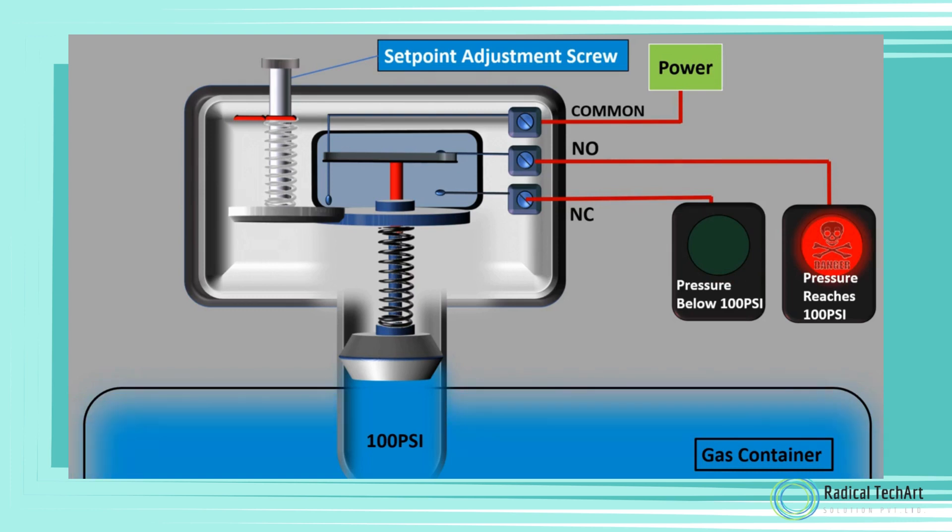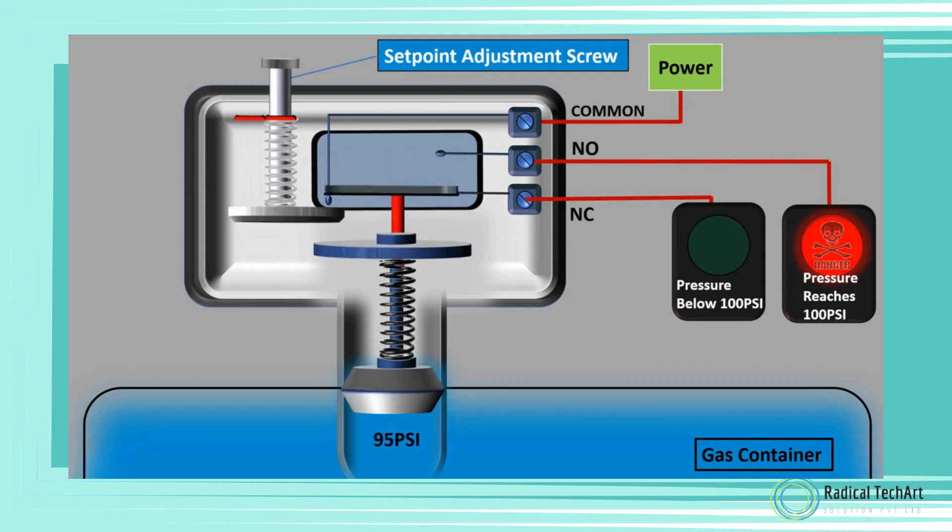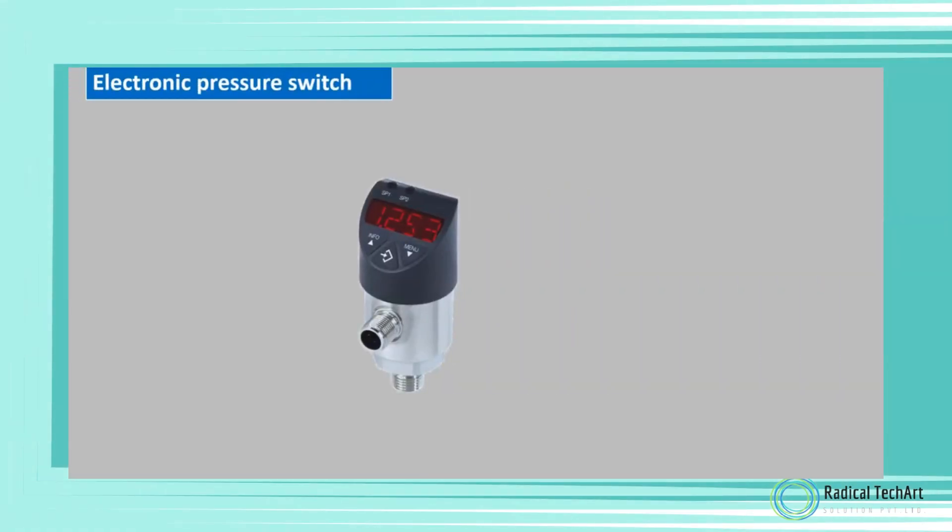If this pressure switch has a differential of 5 PSI, then reset pressure will be 95 PSI, which means that when the pressure reduces to 95 PSI, then the switch will come back to its normal state, that is green light will be on and red light will be switched off.